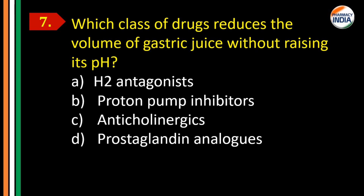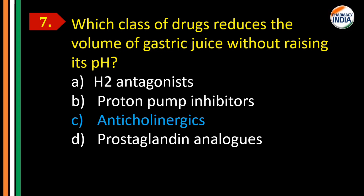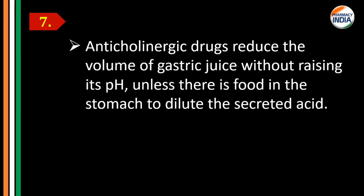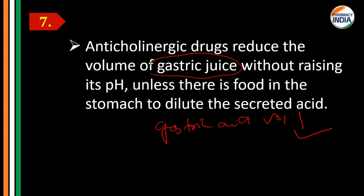Question number seven: antacids reduce gastric acid and raise its pH. But which other class of drugs reduces the volume of gastric acid without raising its pH? Options: A) H2 antagonist, B) proton pump inhibitors, C) anticholinergics, D) prostaglandin analogs. The correct answer is Option C, anticholinergics. Anticholinergics reduce the volume of gastric acid without raising its pH, unless there is food in the stomach to dilute the secreted acid.